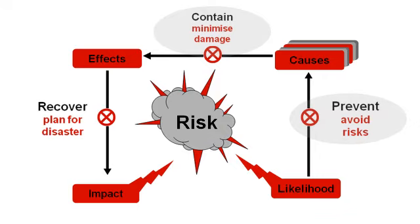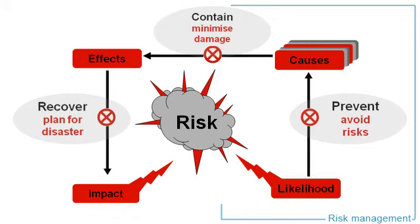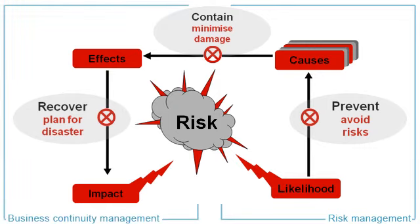However, Murphy's Law would tell you that some risks that you plan for — the controls fail, the treatments that you have in place are not good enough — and something will happen to impact your business objectives, something that we might call a crisis. And the only thing we can do then is really recover from the crisis. You can see there's a very strong link between risk management, which is the prevention and treatment of risk, and business continuity management, which is the response to a crisis or a risk event if it occurs.